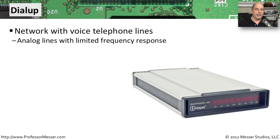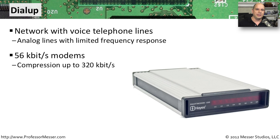Although most discussion today revolves around broadband connectivity, there are still people using modems to communicate to the internet. Modems use standard phone lines and connect just like dialing a phone number. This phone line connection limits the frequency response, resulting in very slow throughputs compared to modern connectivity. Your modem will probably connect at about 56 kilobits per second — not 56 megabits, but 56 kilobits. With data compression, you can sometimes achieve around 320 kilobits per second, but still well short of even one megabit per second.